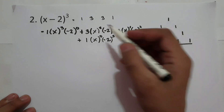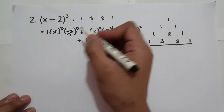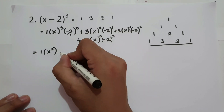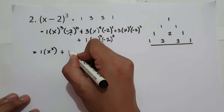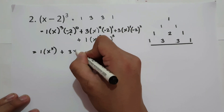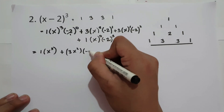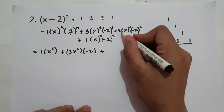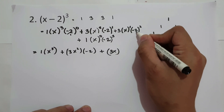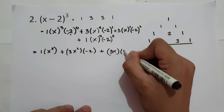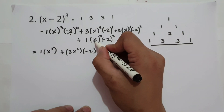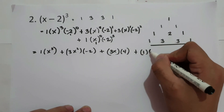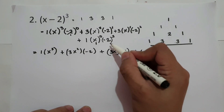Negative 2 raised to 0 is 1, so 1 times 1 is 1, times x cubed. Plus 3 times x squared — that is 3x squared — times negative 2 raised to 1. Plus x raised to 1 times 3, that is 3x, then negative 2 raised to 2, or negative 2 multiplied by itself, is positive 4. Plus x raised to 0 is 1, times 1 is 1, then negative 2 raised to 3 is negative 8 — multiply negative 2 three times to itself.